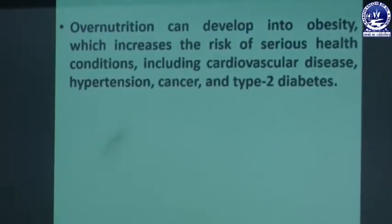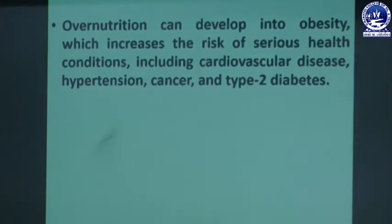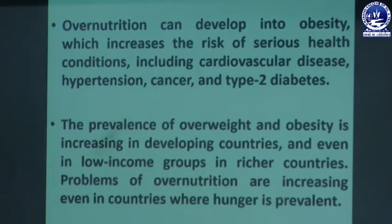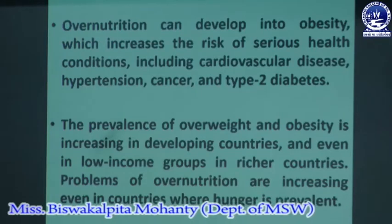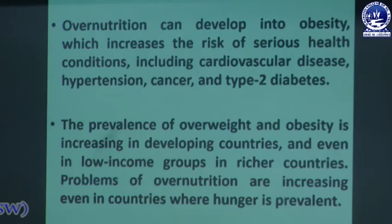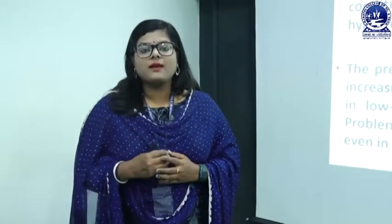Over nutrition can develop into obesity, which increases the risk of serious health conditions including cardiovascular diseases, hypertension, cancer, and type 2 diabetes. The prevalence of overweight and obesity is increasing in developing countries and even in low income groups in richer countries. Problems of over nutrition are increasing even in countries where hunger is prevalent. Due to over nutrition a person will face different types of diseases which are a risk for human life.